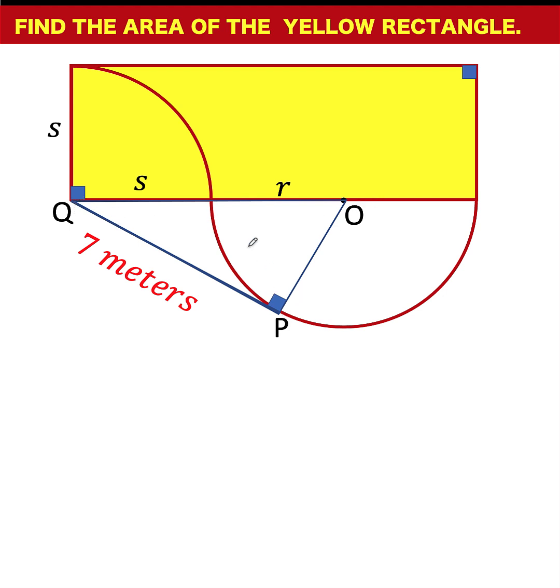Since O, P is also a radius of the semicircle, the length O, P is also r units. Now from here, let's form some equation.